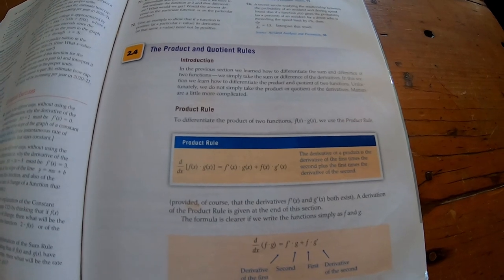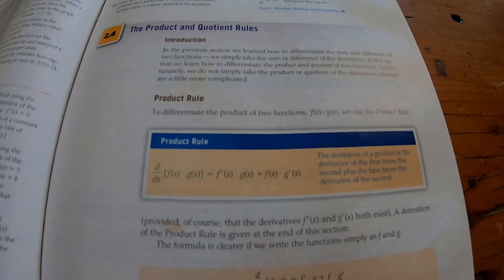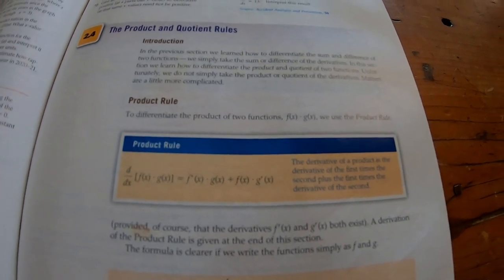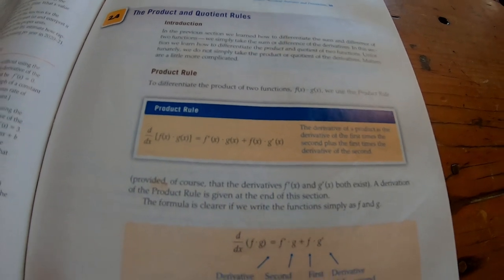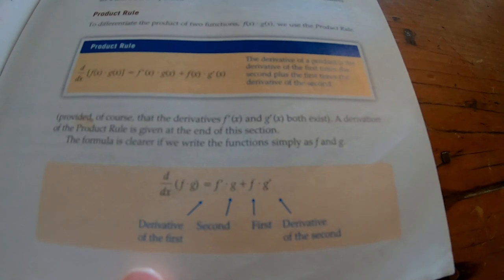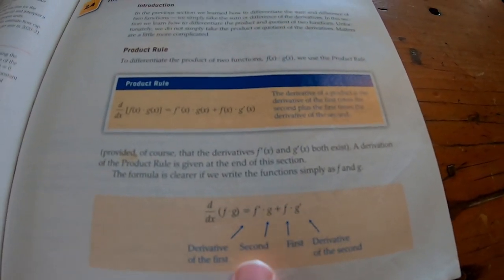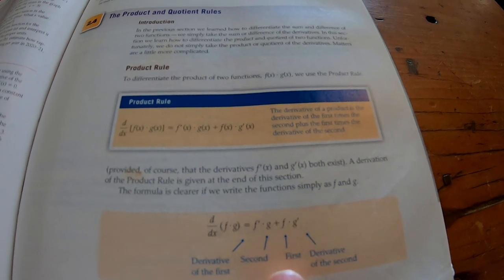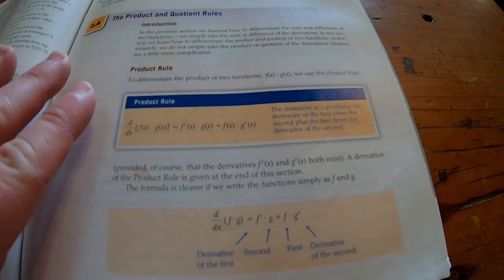This is the section on the product and quotient rules. So it has an entire section on just these two rules. And you see this box. That's how it identifies formulas. And I always thought that this was really nice. It's like, there's the box. It's really clean. And then here's an intuitive explanation. This is how you think of it. The derivative of the first times the second plus the first times the derivative of the second. That's the product rule for Calculus.